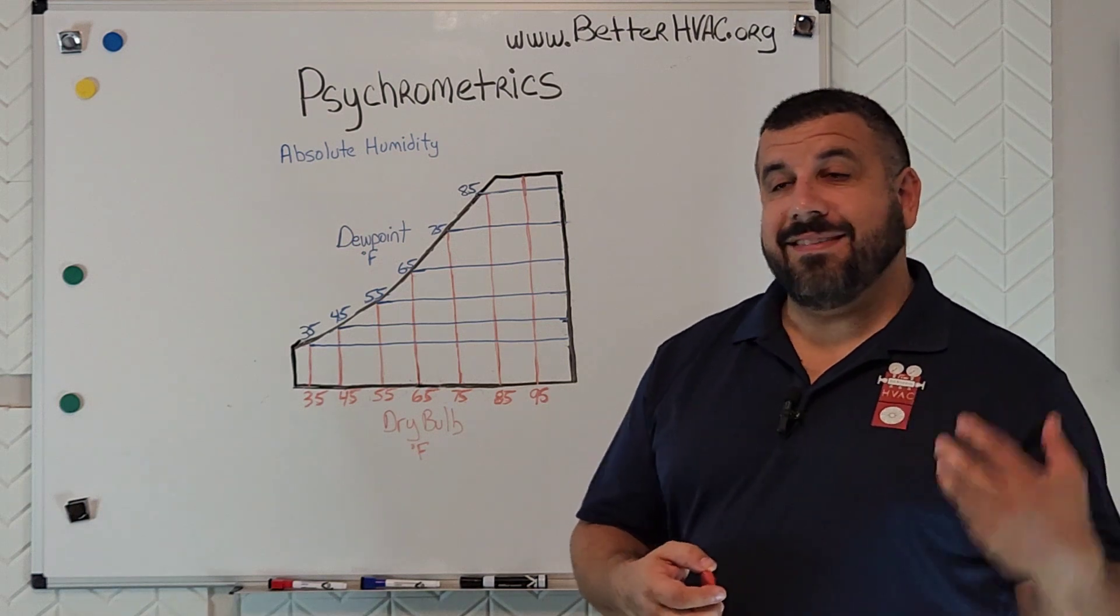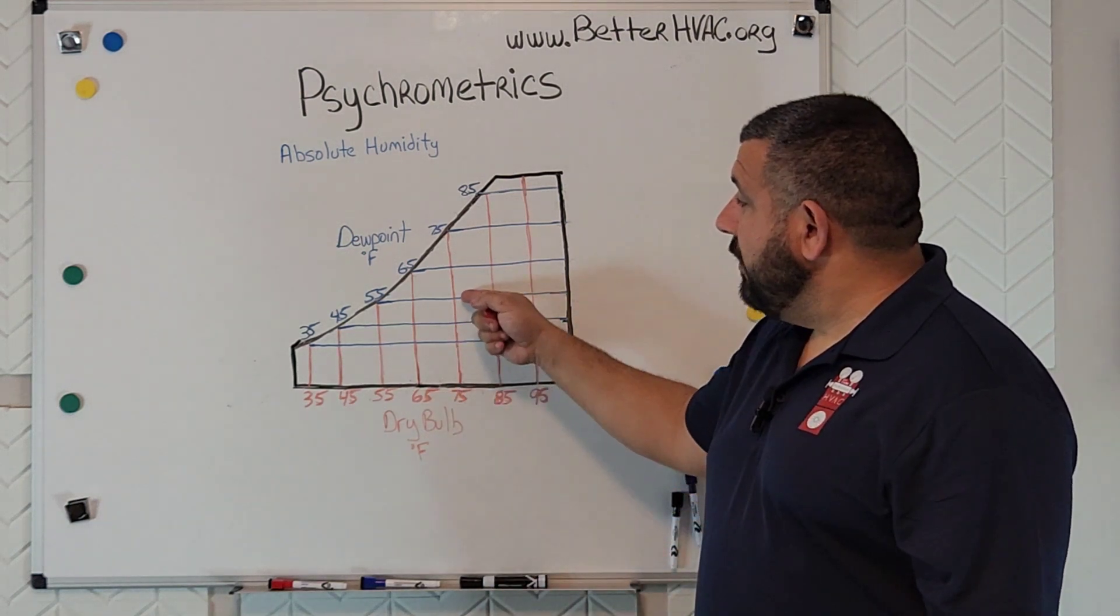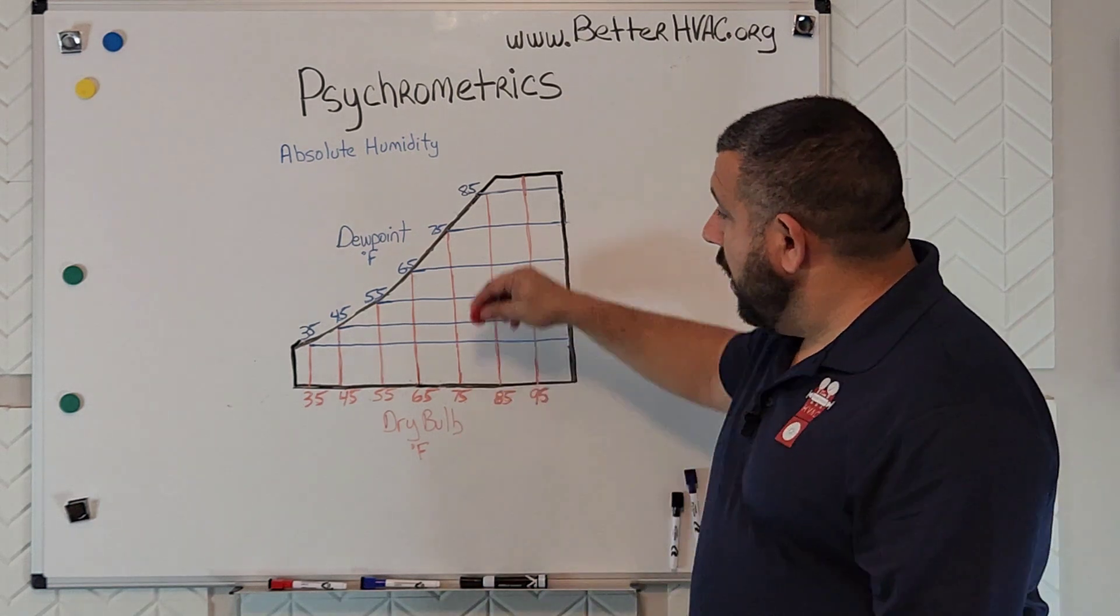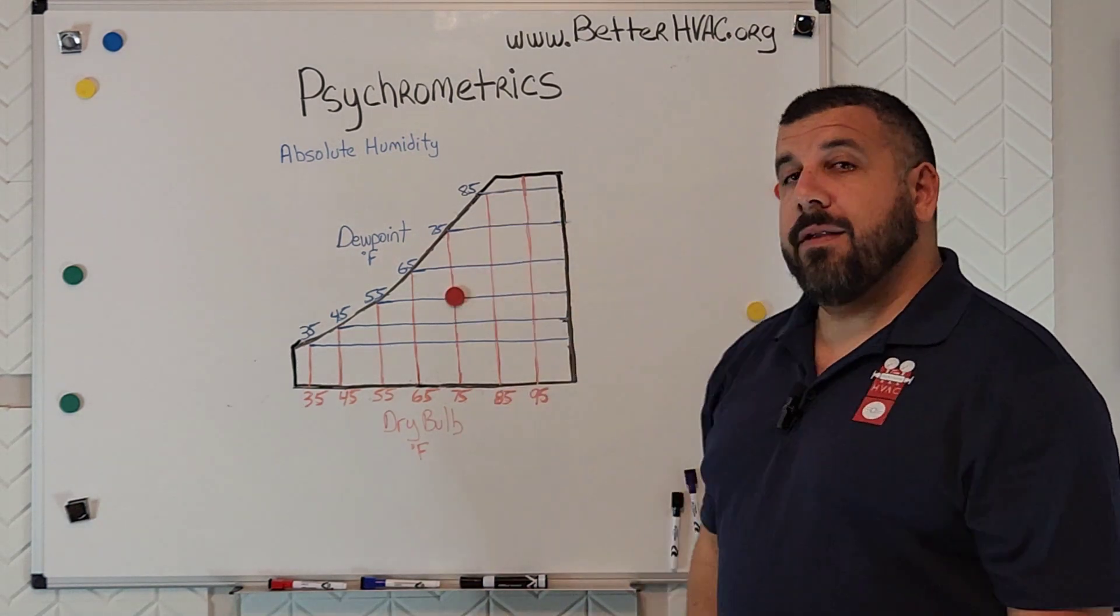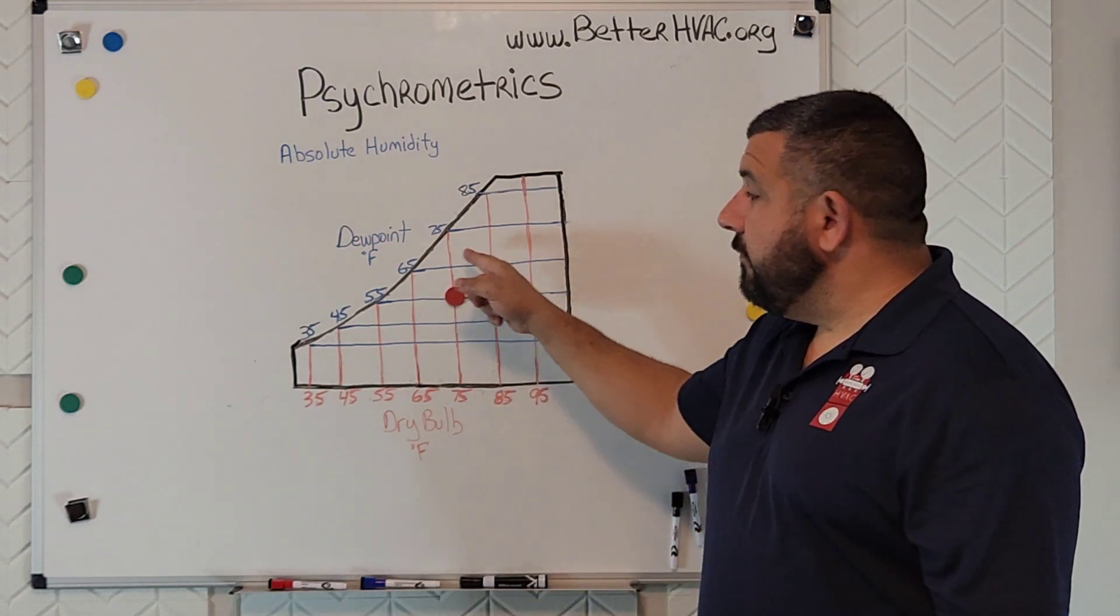So let's say that we are measuring 75 degree dry bulb temperature and 55 degrees of dew point. Here is where our operating point would be. And as you can tell, that is smack dab in the middle of the chart.